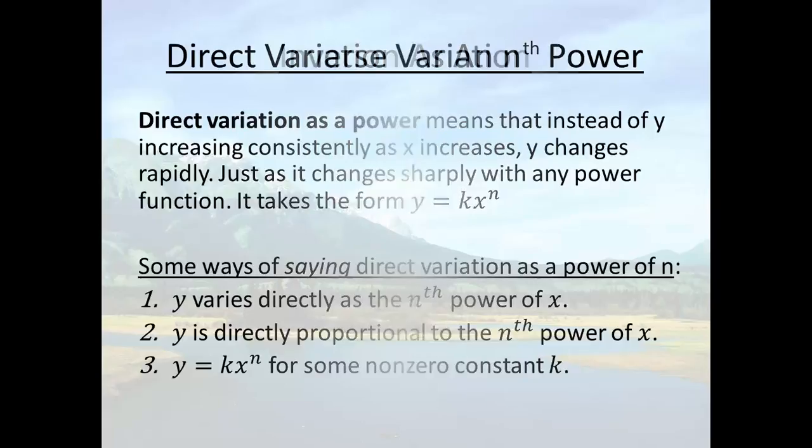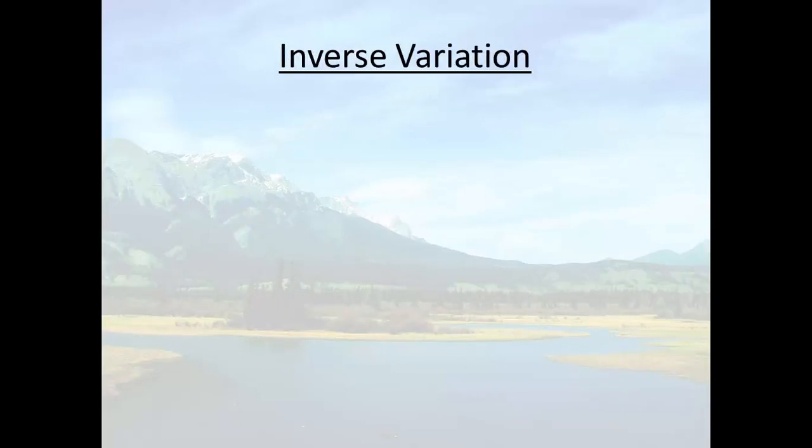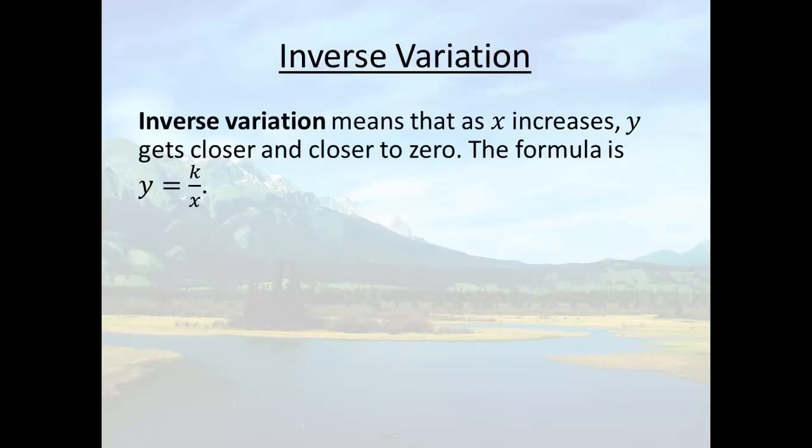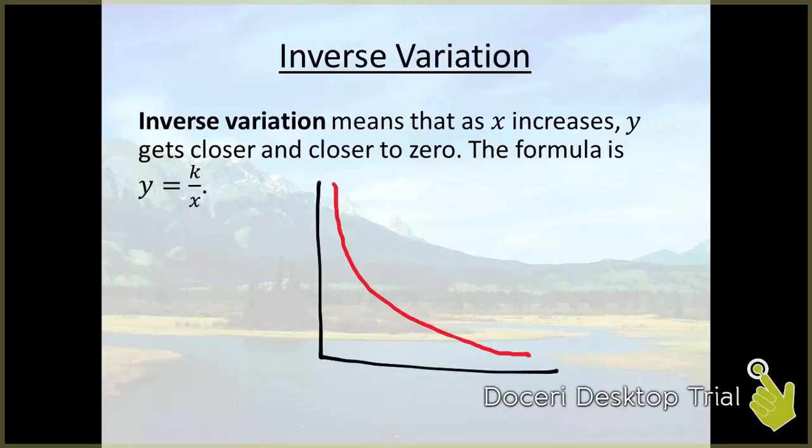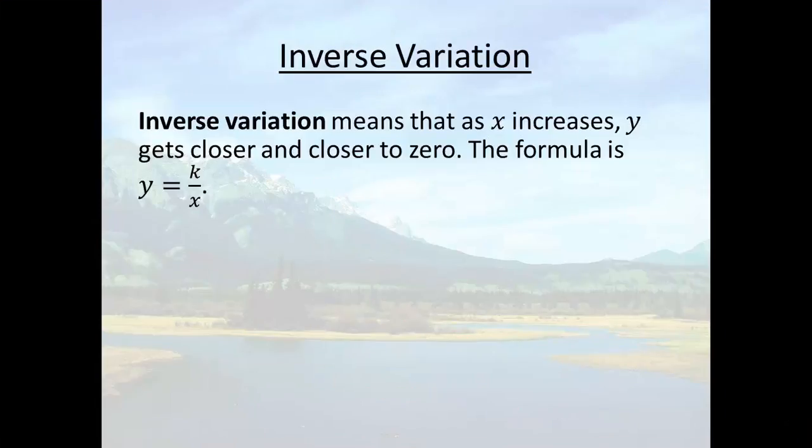Our third type of variation is inverse variation. Basically means that as x increases, y gets closer and closer to zero. So graphically, you may think of it as looking like this. That's the inverse relationship.